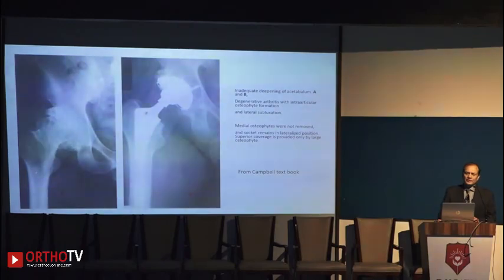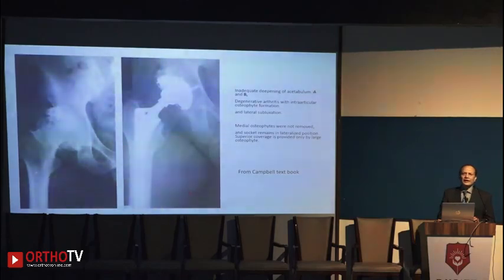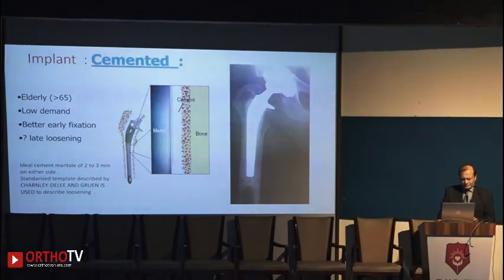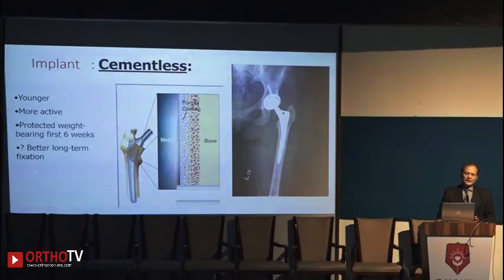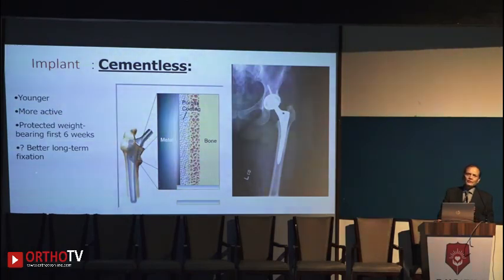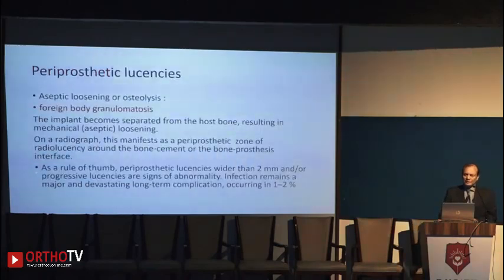A laterally placed acetabular cup increases the horizontal offset; these patients may have a waddling gait or restriction of movement. Cement mantle is important to study for osteolysis — a normal mantle should be 2 to 3 mm between the implant and the bone. In uncemented implants, porous ingrowth must be observed on post-operative and serial follow-up X-rays. Periprosthetic lucency less than 2 mm may represent normal fibrous ingrowth, but more than 3 mm is significant and requires evaluation for osteolysis, infection, or other causes.